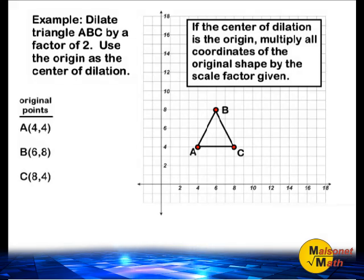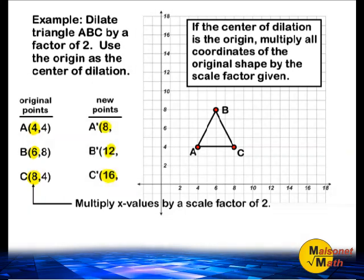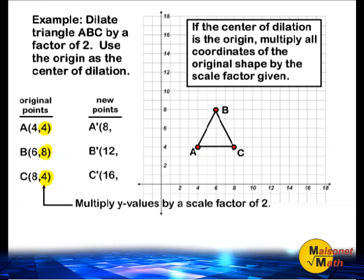First, we should make sure to write down all of the coordinates of our original shape. After writing all of the coordinates, simply multiply all of those numbers by a value of 2. I am going to multiply all of our x values by a scale factor of 2. If we double all of these values — 4, 6, and 8 — we get the new values 8, 12, and 16. Now we are going to increase the y values by a scale factor of 2 as well. Taking the values 4, 8, and 4 and doubling those gives us the values 8, 16, and 8.